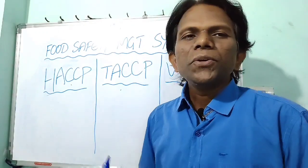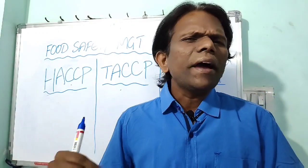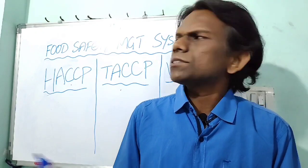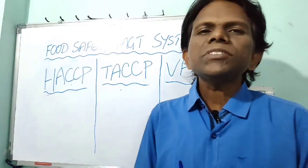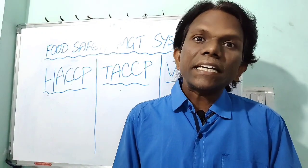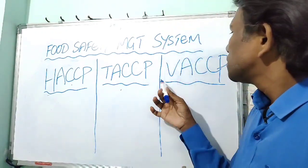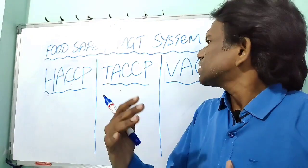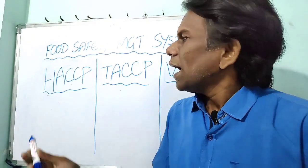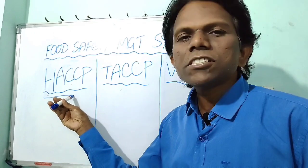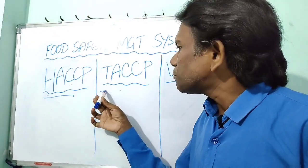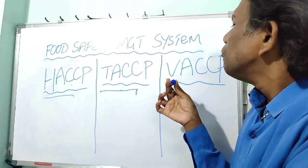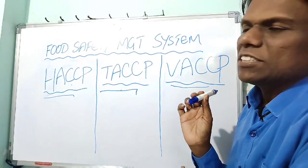What is HACCP? HACCP stands for Hazard Analysis Critical Control Points. Whereas TACCP stands for Threat Assessment Critical Control Points. And VACCP stands for Vulnerability Assessment Critical Control Points. HACCP is a Food Safety Management System, whereas TACCP is Food Defense and VACCP is Food Fraud Management System.